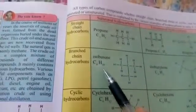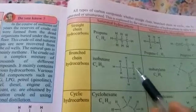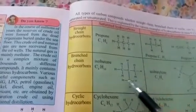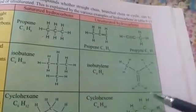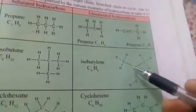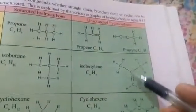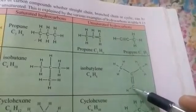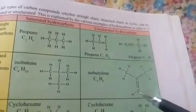For branched-chain hydrocarbons: isobutane has molecular formula C4H10, where one carbon atom is connected to another carbon in a branched rather than straight form. Isobutylene — also called isobutene — has a branched structure where one carbon is connected to another with a double bond, so it is not in a straight line but in a branched form.